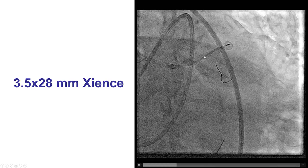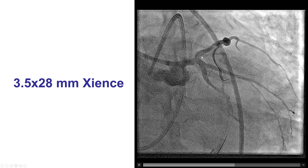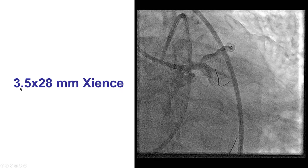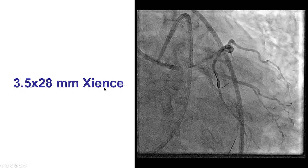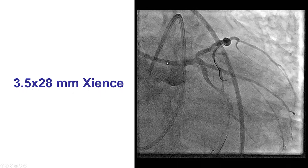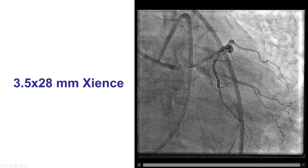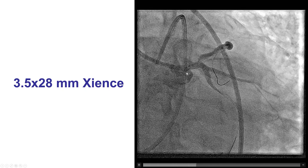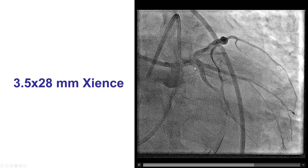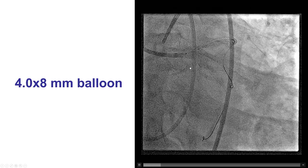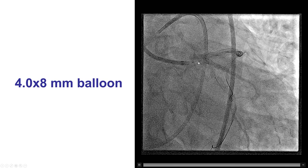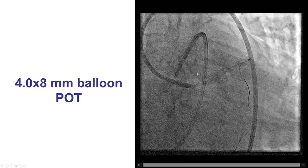After that, we took a 3.5×28 mm stent. The choice of stent is important here because the 3.5 mm Xience stent can be expanded all the way to 5.75 mm — so although it is 3.5 mm in the proximal LAD, it can be taken to a much larger diameter into the left main. We performed proximal optimization with a 4.0×8 mm balloon.